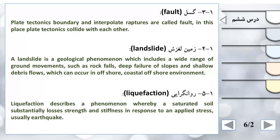And shallow debris flows - جریان‌های سطحی. Shallow یعنی سطحی، Flows یعنی جریان‌ها، which can occur in offshore coastal environments - که می‌تواند در محیط‌های ساحلی نزدیک دریا اتفاق بیفتد. پس در زمین‌لغزش بیشتر wide range of ground movement مد نظر است، یعنی یک گستره وسیع را شامل می‌شود.